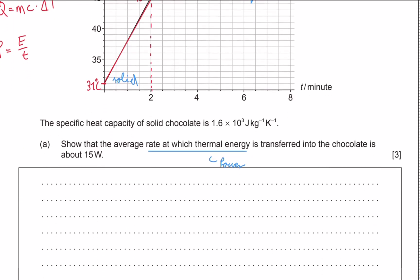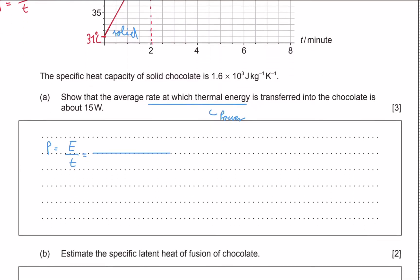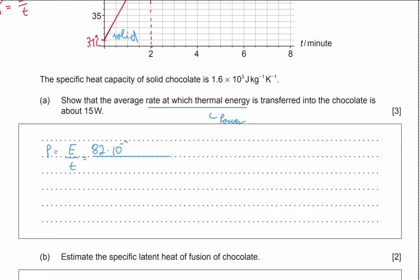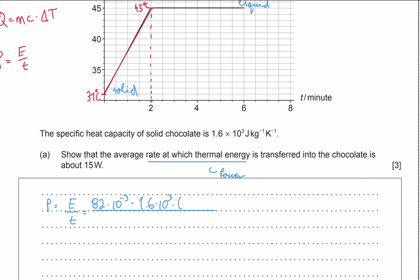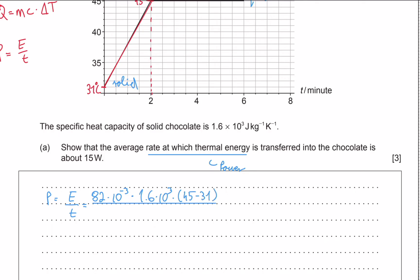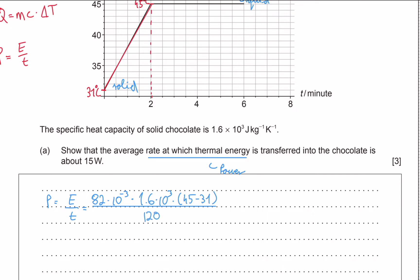The power equals the energy supplied over the time it took to supply this energy. The energy is the mass — 82 grams converted to kilograms, which is 82 × 10⁻³ kg — times the specific heat capacity, 1.6 × 10³ J/kg°C, times the change in temperature of 14°C (45 minus 31). All of this is divided by 120 seconds. This gives us 15.3 watts, which is approximately 15 watts, which is what we have to show.